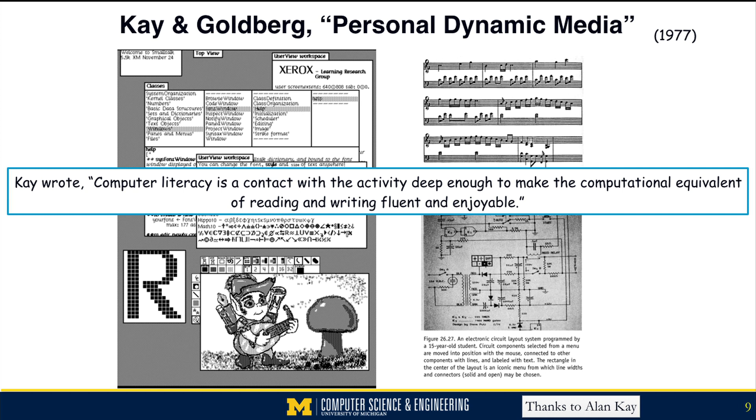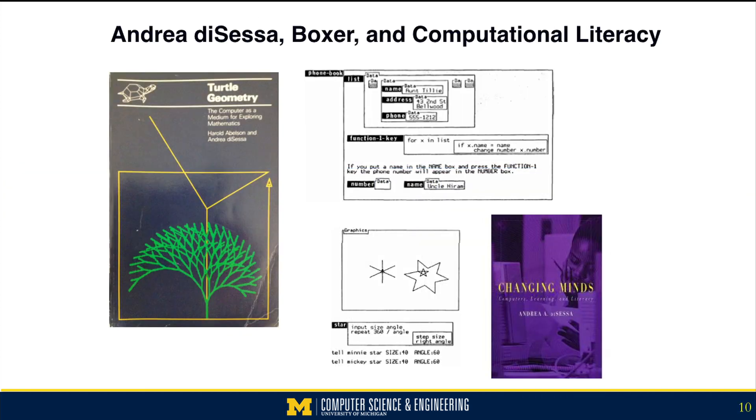Alan wrote: computer literacy is a contact with the activity deep enough to make the computational equivalent of reading and writing fluent and enjoyable. Their idea was that the computer would become a new way of expressing thought, a new kind of medium that was particularly powerful because it could be any other previous medium - music, pictures, animations, movies. But what's more is it could be interactive. The idea was that we could use the computer to be this new kind of a medium.